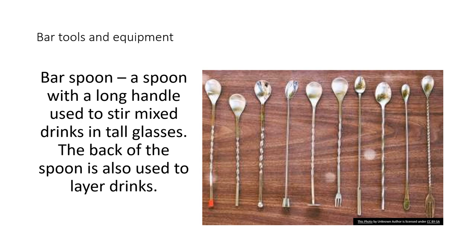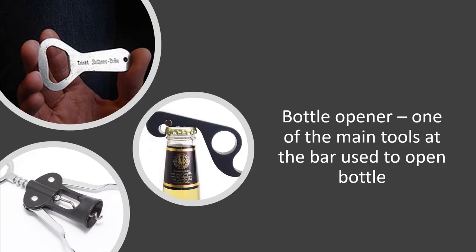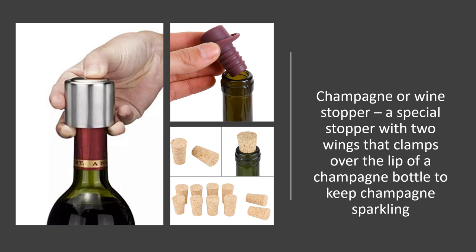There are at least 32 or 33 bar tools enumerated in our textbook. A bar spoon is a spoon with a long handle used to mix drinks in tall glasses; the back of the spoon is also used to layer drinks. A heavy-duty blender is essential to make frozen drinks and blend mixed drinks. A bottle opener is one of the main tools at the bar used to open bottles. A can opener or can punch is used to remove one end of a can, while a can punch is used to make a hole in juice cans. A champagne or wine stopper is a special stopper with two wings that clamps over the lip of a champagne bottle to keep champagne sparkling.